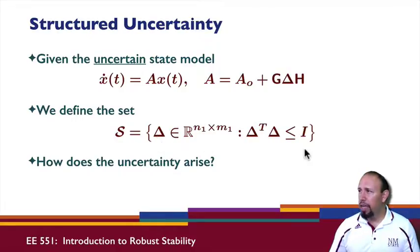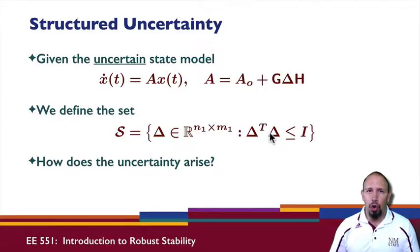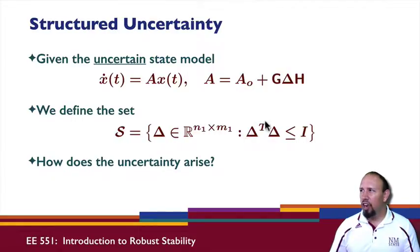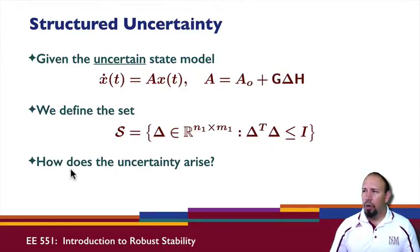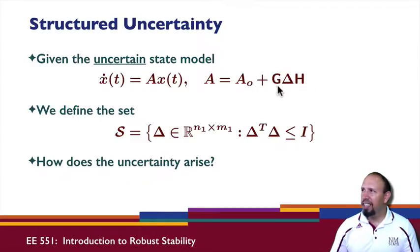S is the set of uncertainty matrices that have their norm less than one. The norm here is the largest singular value, so the norm must be greater than or equal to this. How does this kind of uncertainty arise? This looks kind of specific — how do I get something constant and then something that has the uncertainty term associated with it?